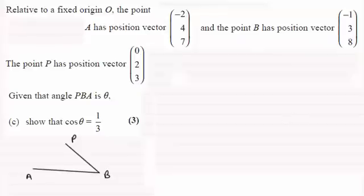And we've got to show that this angle in here which is theta, its cosine is a third. Now if you're using the scalar product or dot product, it's very important in questions like this to make sure that you get the directions of the vectors right.